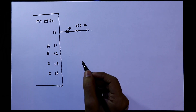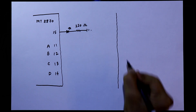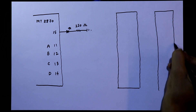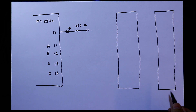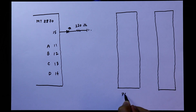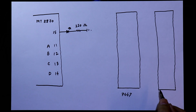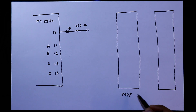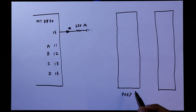To drive the seven segment display we need IC 7447. If you are going to connect a common anode display then you need IC 7447, and if you are going to connect a common cathode display then you need IC 7448. I've already discussed these two ICs — links are in the description below.